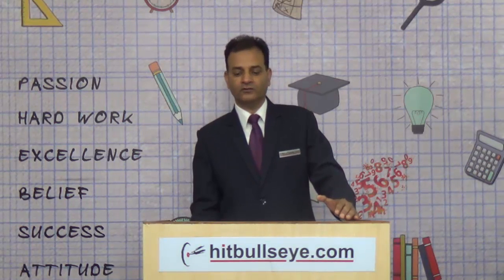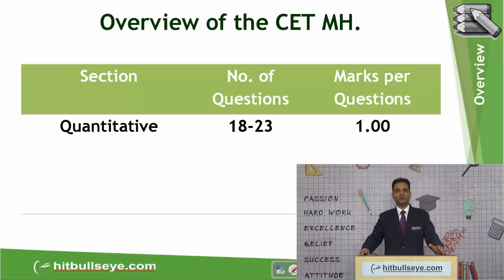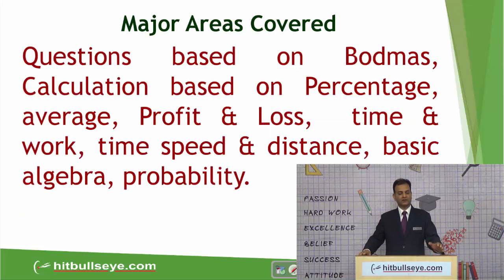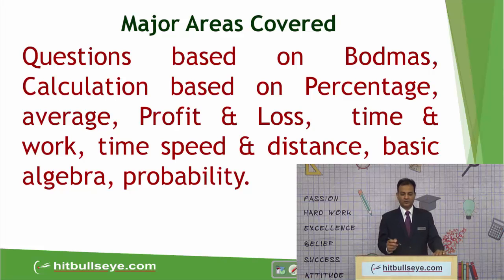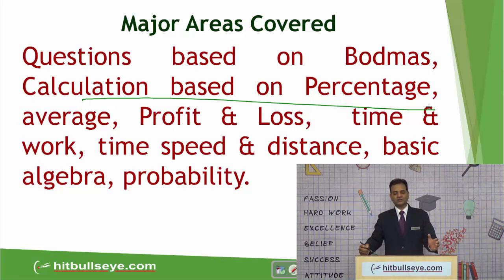Let's have an overview of the session. There is no separate section in the exam — the paper is random. Last year the total number of quantitative questions was between 18 to 23, and each question carries one mark. The major areas covered were percentages, averages, profit and loss, time and work, time speed and distance, basic algebra, and probability. The questions from the maths area were of a very easy level.